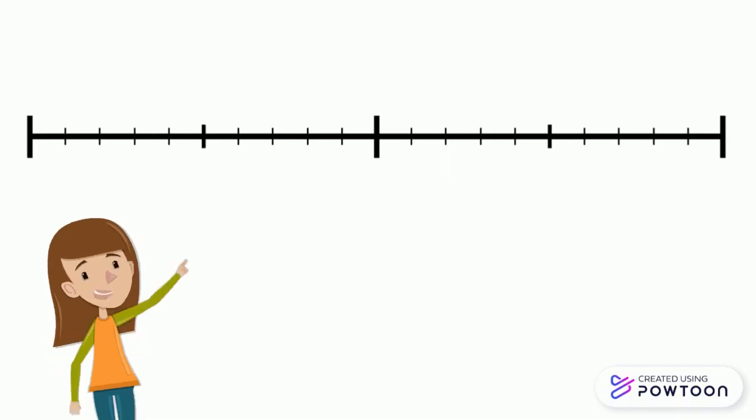A number line is a straight line with numbers placed on it, from the smallest to the largest. We put small dashes to indicate the place of the numbers, but since we don't have enough space to write all the numbers, we will only write the main numbers.